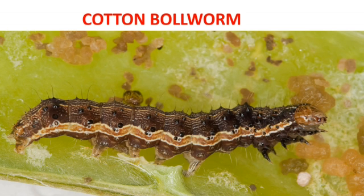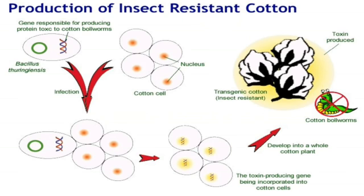This is the image of a cotton bollworm. Let's see the process involved in insect resistant cotton.